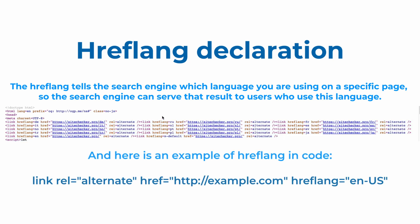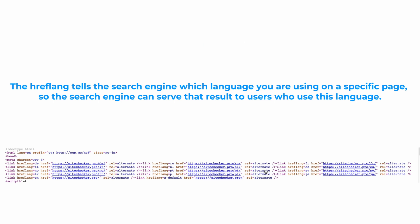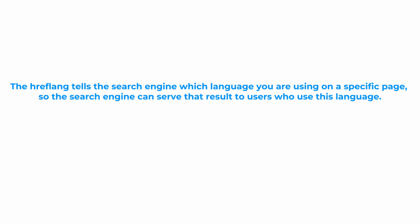And here you can see an example of how hreflang can look in code. For example, if you create a different language version — Spanish, for example — of your English language homepage,